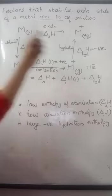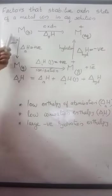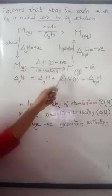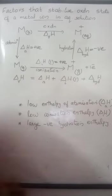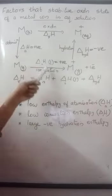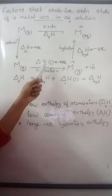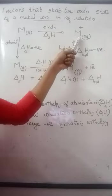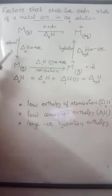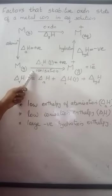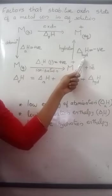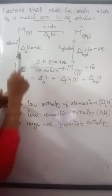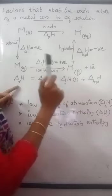So, the process of formation of an oxidation state in aqueous solution from a metal involves three processes: atomization — first converting it to atoms in the gaseous state — then ionization, removal of electron, then hydration. The stability of this oxidation state depends on these three enthalpy values: enthalpy of atomization, enthalpy of ionization, and hydration enthalpy. The overall enthalpy of this reaction equals the sum of enthalpy of atomization, enthalpy of ionization, and the hydration enthalpy.